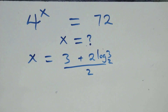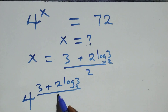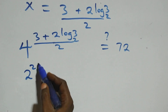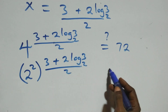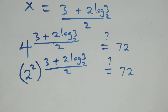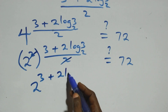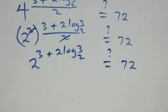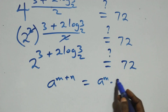Then all we have here becomes 4 raised to power (3 plus 2 log 3 base 2, all over 2) — is it equal to 72? We can rewrite 4 as 2 squared, which is raised to power (3 plus 2 log 3 base 2, all over 2). The 2 in the exponent and 2 in the denominator cancel, giving us 2 raised to power (3 plus 2 log 3 base 2). We apply the power law: a raised to power (m plus n) equals a raised to power m times a raised to power n.